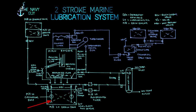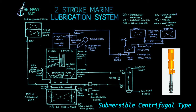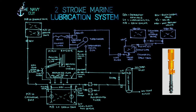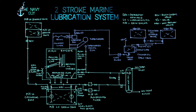Two main engine lube oil circulating pumps are present — one is running and one is kept on standby in case of maintenance or failure, to ensure lubrication does not stop. It is a submersible axial centrifugal type pump, electric motor driven, generating a pressure of 4.3 bar.